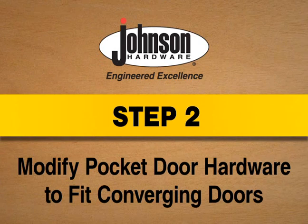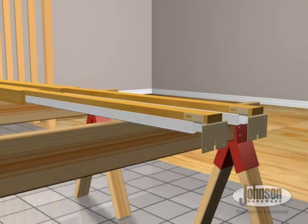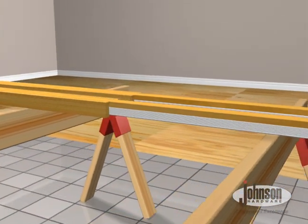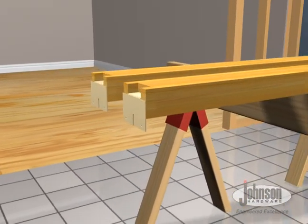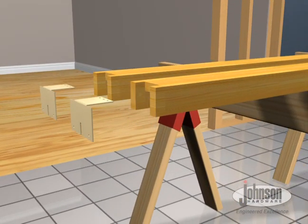Step 2. Modify Pocket Door Hardware to Fit Converging Doors. To begin modifying the pocket door hardware, remove and discard end plates from door opening end of each header.